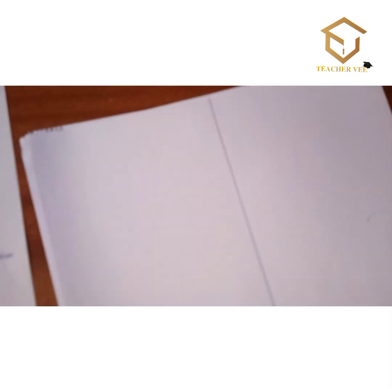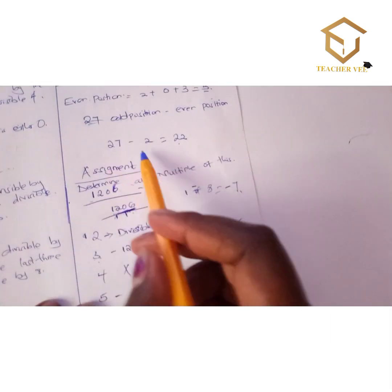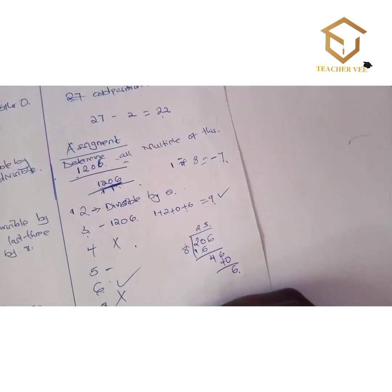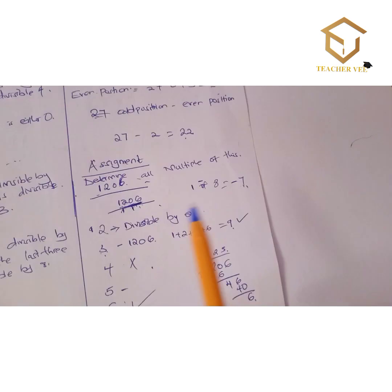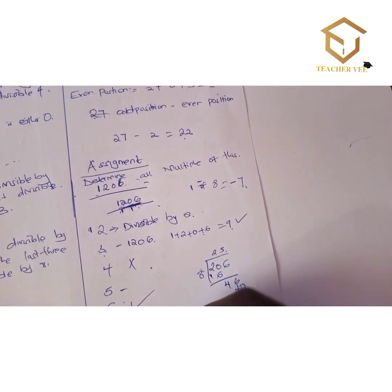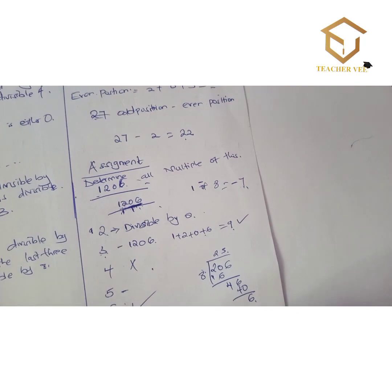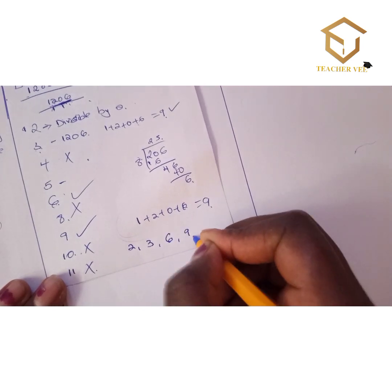Now let me talk about the divisibility test of 9 before finishing the assignment. For a number to be divisible by 9, the sum of its digits must be divisible by 9. For 1206: 1 + 2 + 0 + 6 = 9. The divisibility test of 9 is the same as that of 3. Since the sum is 9, this number is divisible by 9.